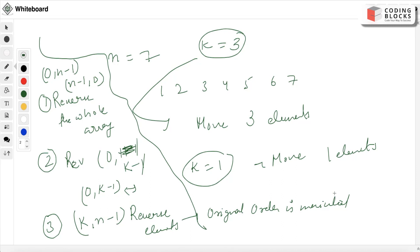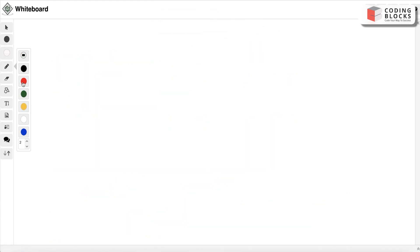Then what we will do is reverse nums and nums plus K. And finally, what we will return is nums plus K to nums plus n to maintain the original order, and this will give us the result.